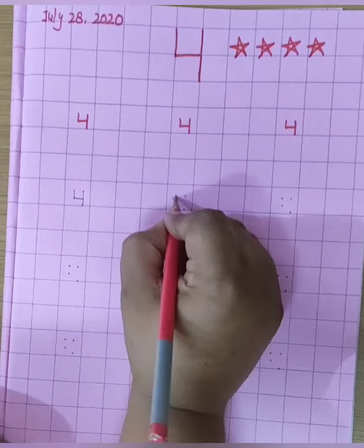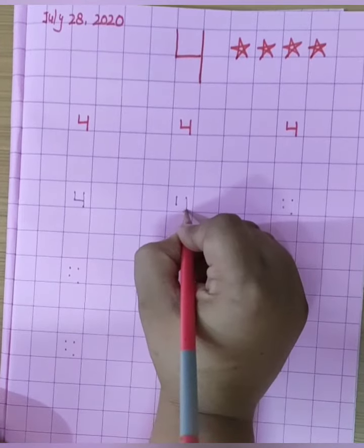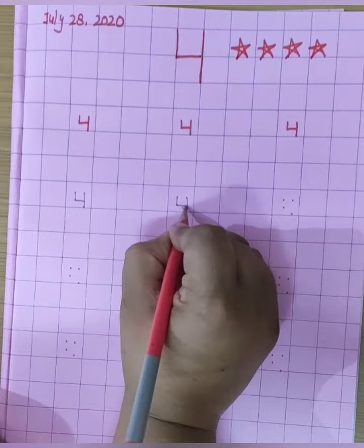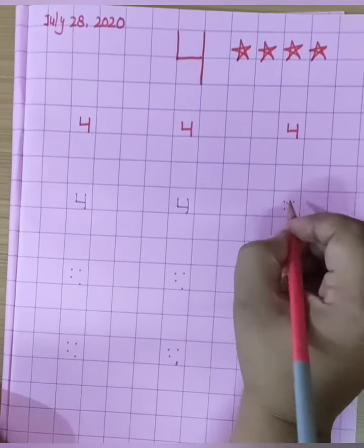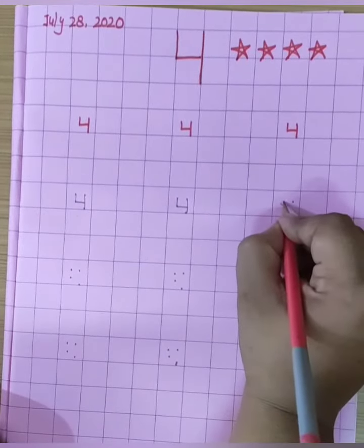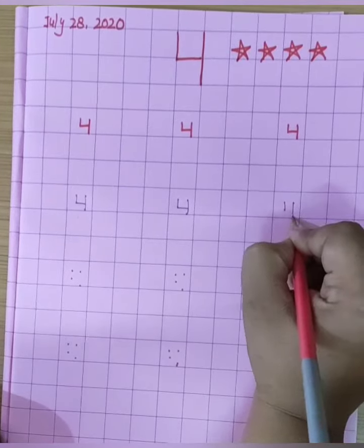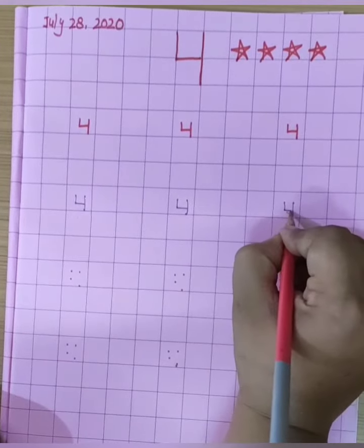Make a small standing line, big standing line, slipping line, 4. Once again, make a small standing line, big standing line and slipping line.